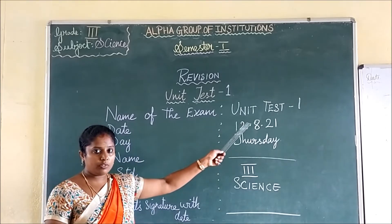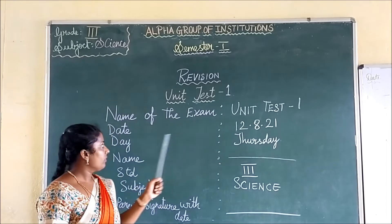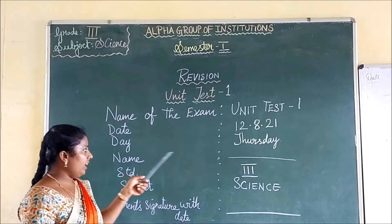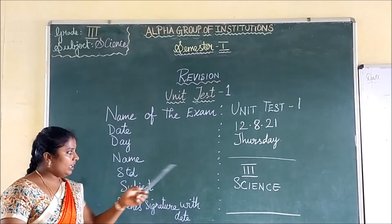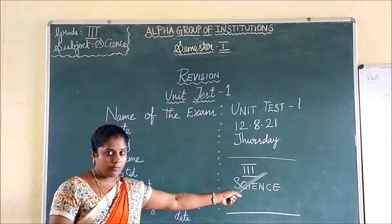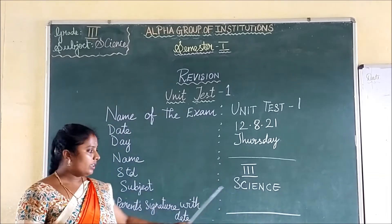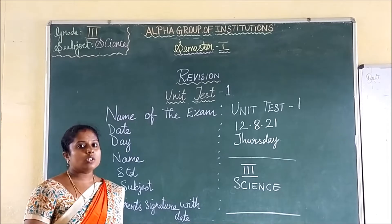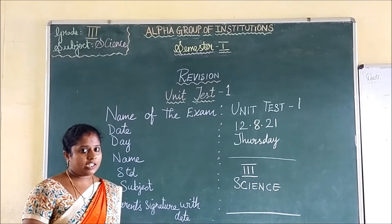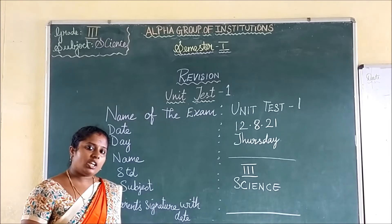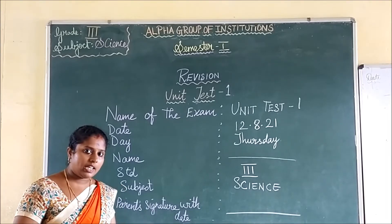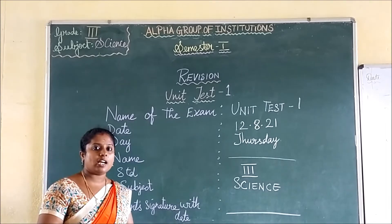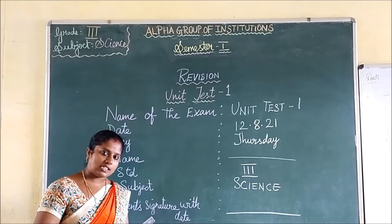In the first page you have to write: the name of the exam — Unit 1; then the date; then your name; then standard; then subject — Science; and last, parent signature with date. Whether it is mother or father, their signature and date have to be on the paper. These are the things that have to come on the first page. And then you have to start writing Section A, Section B, Section C.